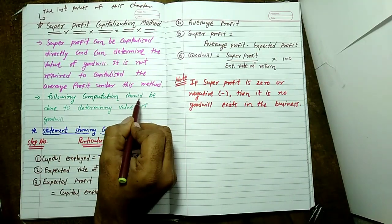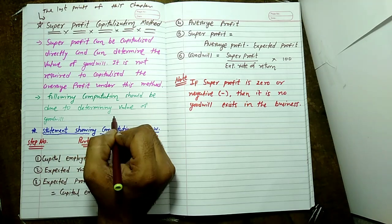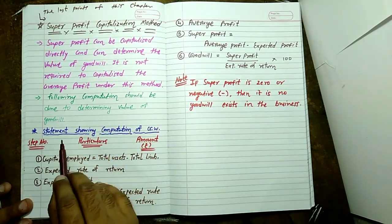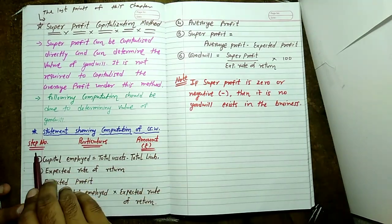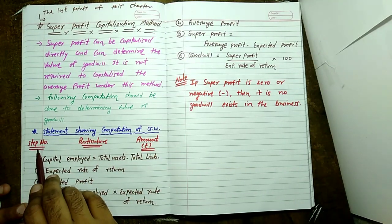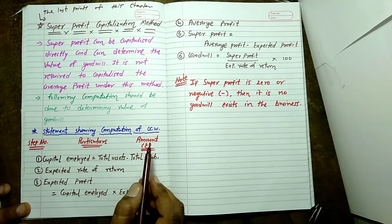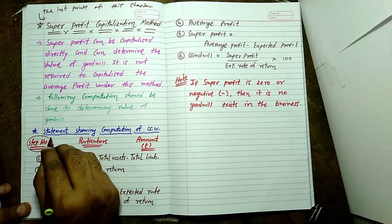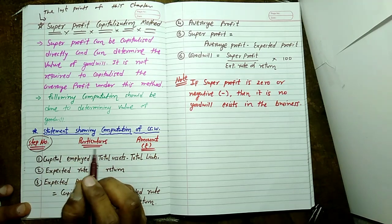Following computation should be done to determine value of goodwill. The statement showing computation of goodwill: column number one step number, particulars, and amount. Friends, this step is important to remember in order to solve an example.